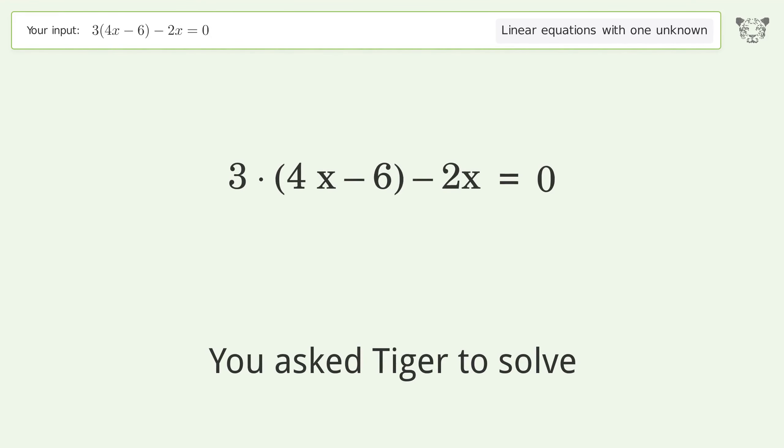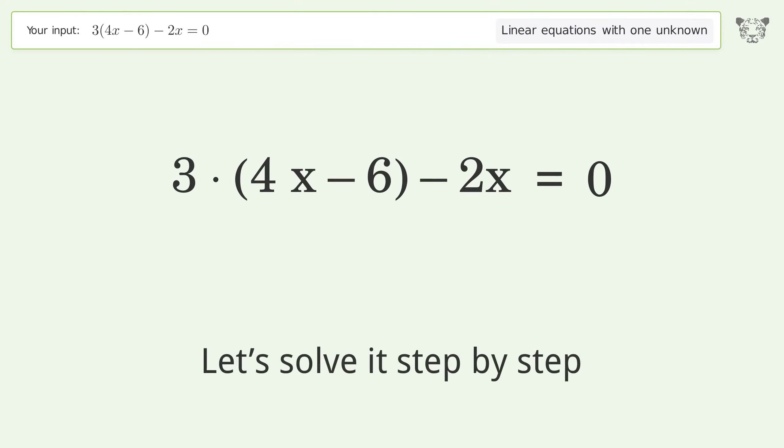You asked Tiger to solve this, which deals with linear equations with one unknown. The final result is x equals 9 over 5. Let's solve it step by step: simplify the expression, expand the parentheses.